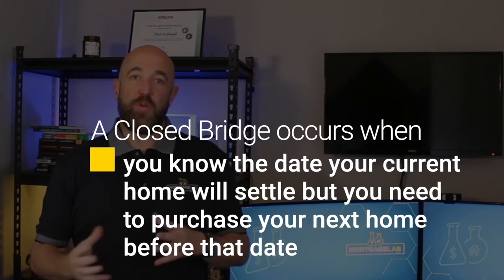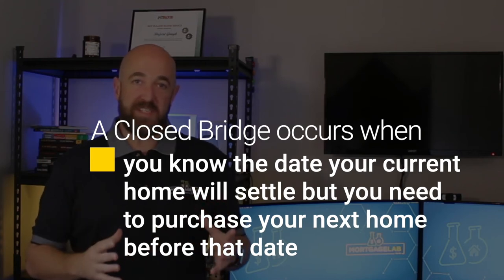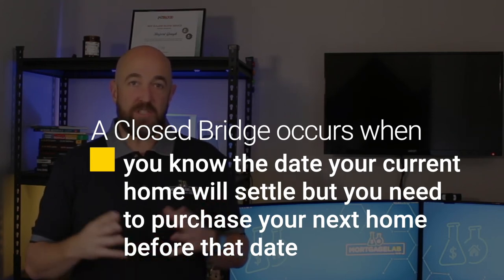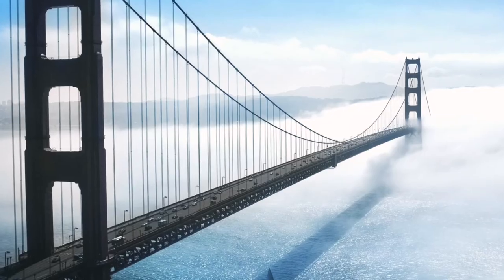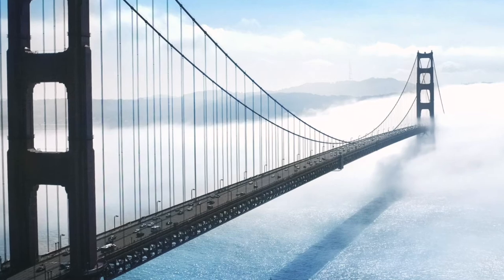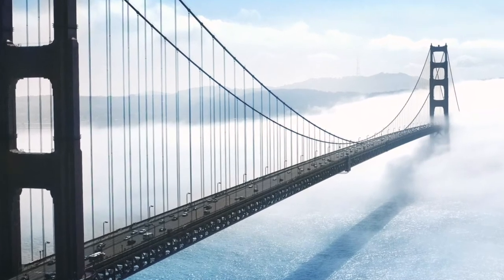A closed bridge is a bridging loan when you already know the specific settlement date for your current home. Usually you'd have an unconditional offer in place for your current home. This is great for when there is overlap between settlement of your old property and settlement of your new one. Closed bridge loans have a lower risk for the bank, so are easier to get than open bridge loans.